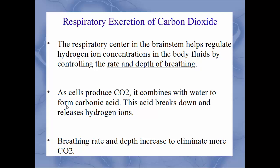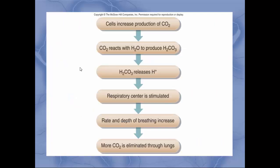Next is the respiratory excretion of carbon dioxide. The respiratory center in the brain stem helps regulate hydrogen ion concentration by controlling the rate and depth of breathing. Carbon dioxide produced by cells combines with water to form carbonic acid (H₂CO₃). When carbonic acid breaks apart it releases hydrogen ions, lowering pH. To counteract this, breathing rate and depth increase to eliminate CO₂ faster, preventing it from combining with water to form more carbonic acid.